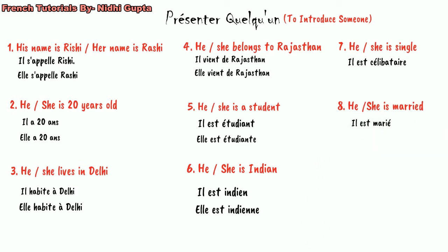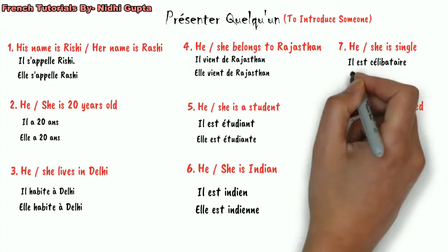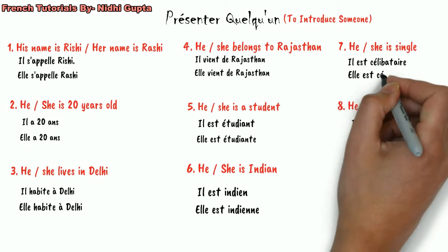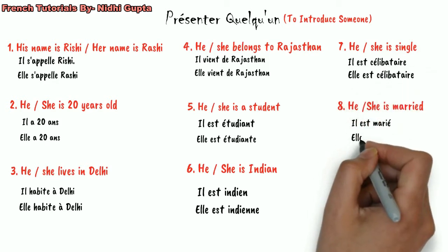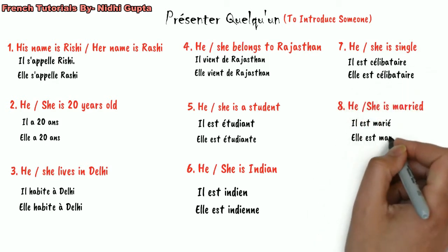Similarly, if Rashi is single, we say 'elle est célibataire,' and if Rashi is married, we say 'elle est mariée.' Next, we can talk about which languages Rishi or Rashi speaks.